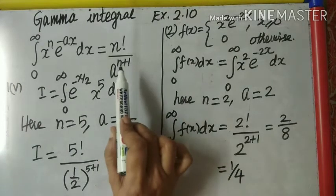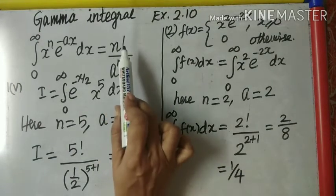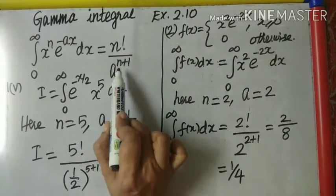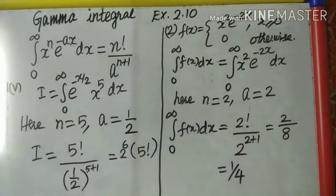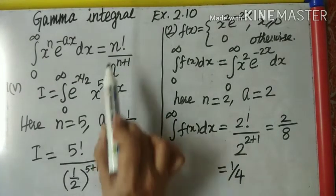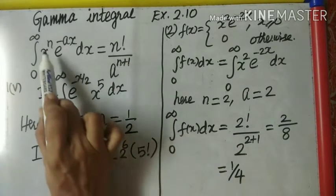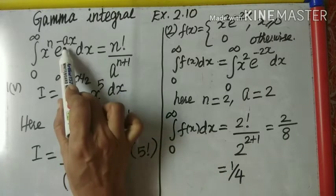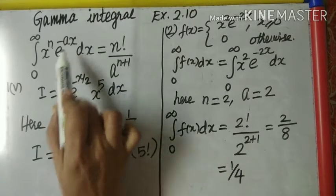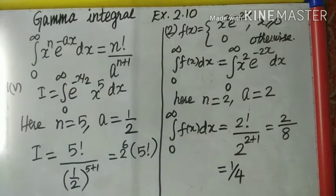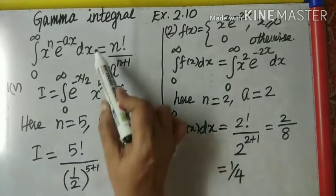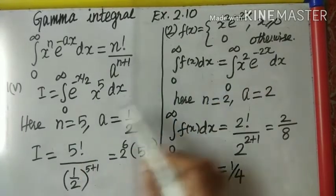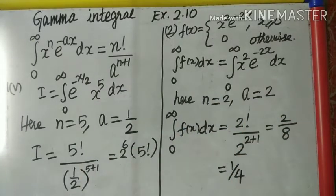The formula is n factorial divided by a to the power n plus 1, where n is the power of x and a is the coefficient in the exponent with minus x. Let us apply this in two problems from the exercise.